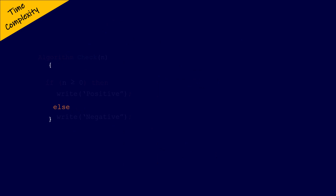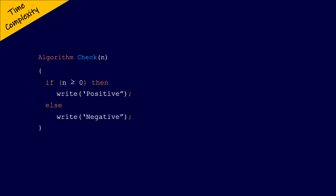Let us consider this algorithm. This algorithm takes a number n as the parameter and checks if the number n is a positive number or a negative number. Suppose if the number n is passed as 5, then the condition in the if-else structure is true, and the statement inside the if structure — i.e., the write function — will be executed. That is, we will have the output as positive, and the else structure will not be executed. Now since the if condition is executed only once, it is considered as the primitive or basic statement, and will be taking unit time to execute, and its frequency is 1.